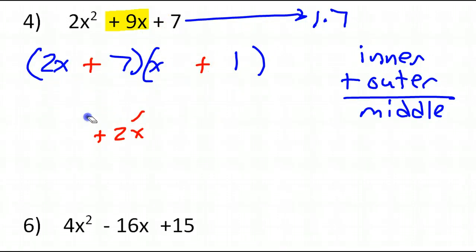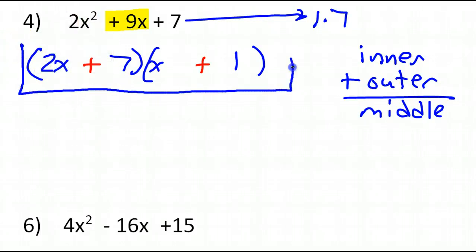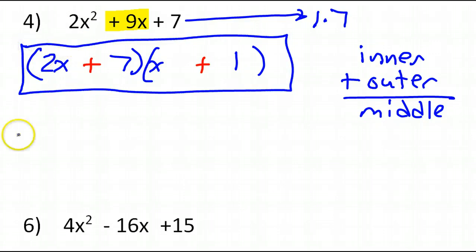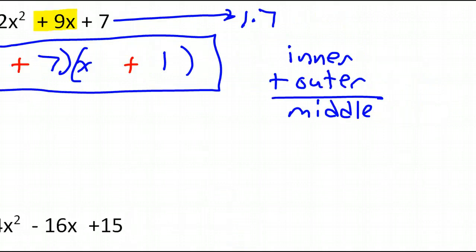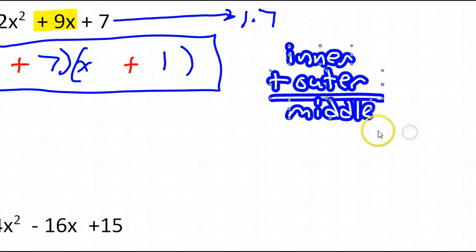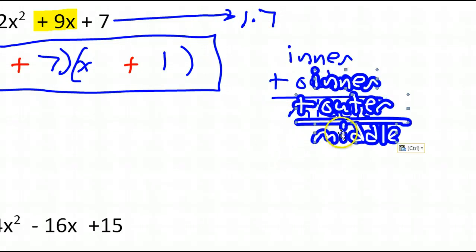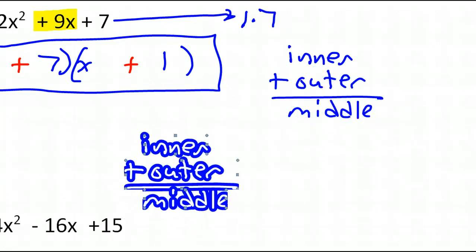I love it when the leading coefficient is not 1 — it makes it a little more interesting. 3x squared — that's prime, so it can only be 3x times x. Now 16 has some choices: it could be 4 times 4, 2 times 8, or 1 times 16.